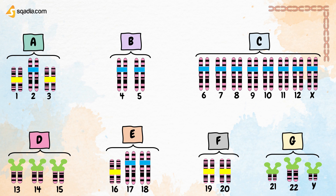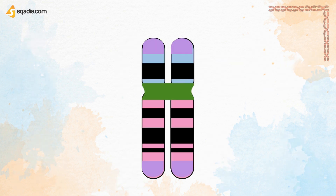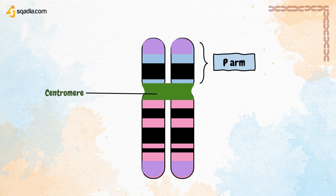A chromosome consists of a P-arm, which is the shortest arm of a chromosome. The P comes from the French word 'petit', meaning small. The centromere appears as a constricted region of a chromosome and plays a key role in helping the cell divide up its DNA during division, such as mitosis and meiosis.